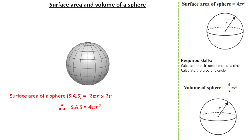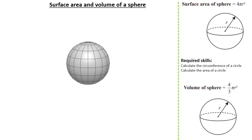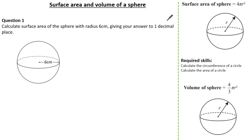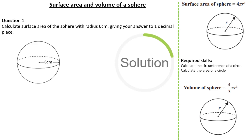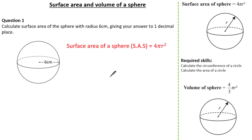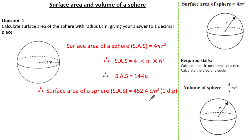Now we know the formula, let's apply it to a question. We need to calculate the surface area of a sphere with a radius of 6 cm, giving our answer to 1 decimal place. Using the formula 4 pi r squared and substituting r = 6, we get 144 pi, which works out to 452.4 cm squared to 1 decimal place.